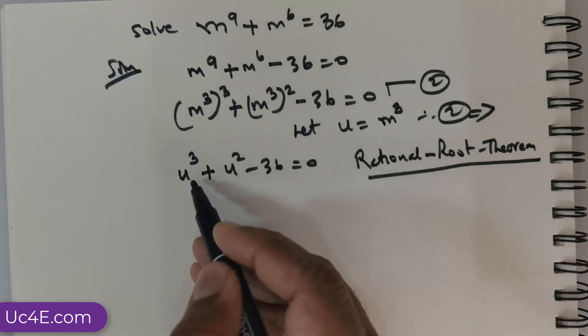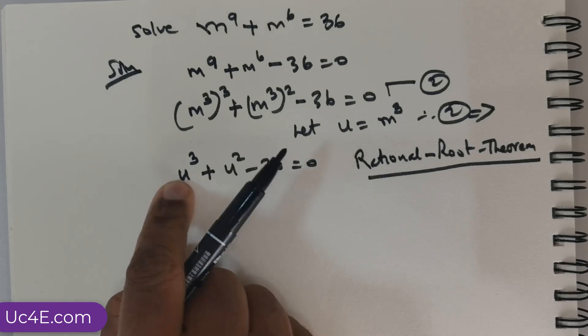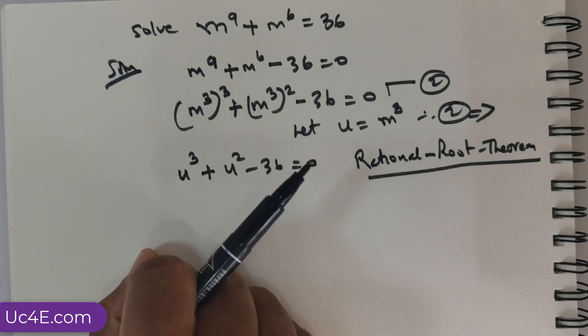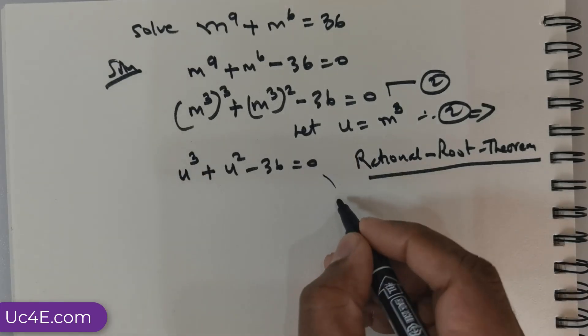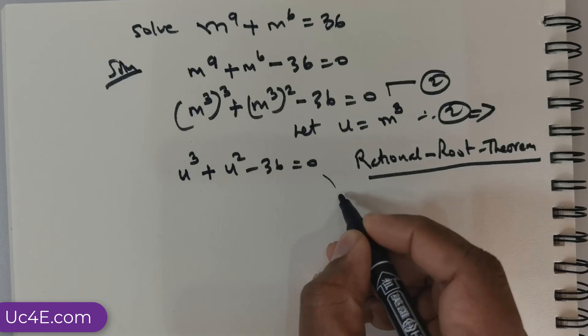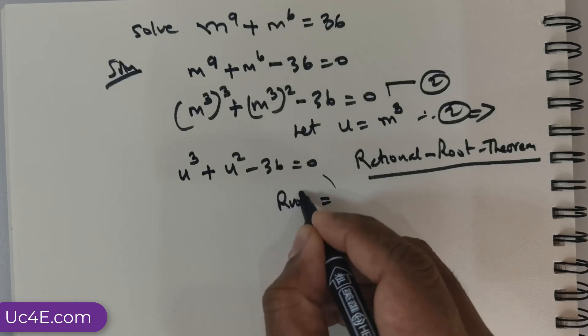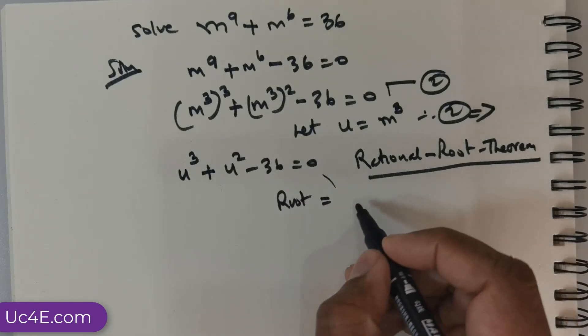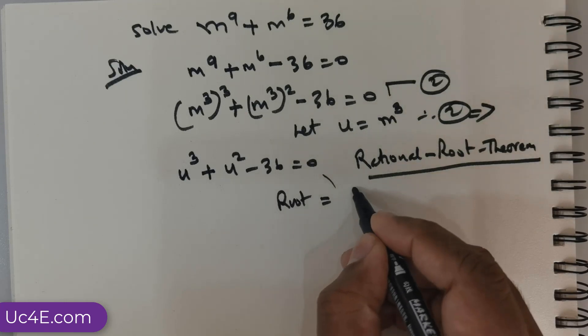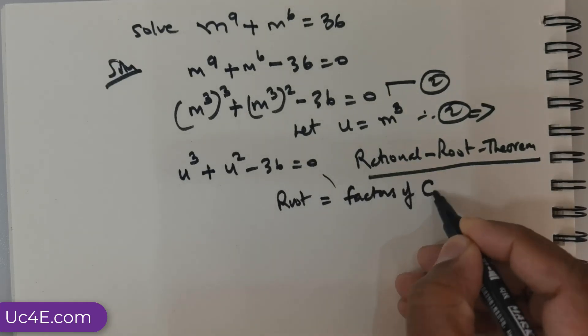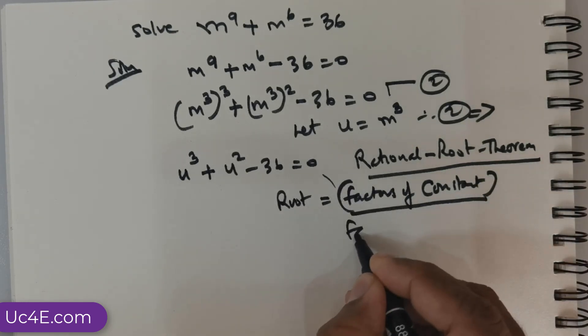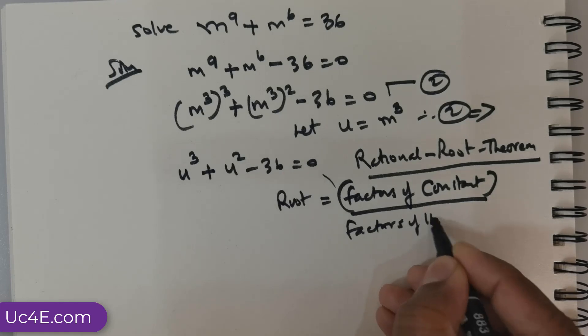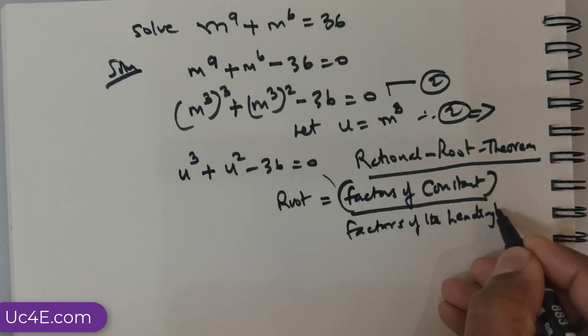Now, what exactly does the Rational Root Theorem state? You have a constant term and you have the term with the power. In other words, the variable with the power. What we actually do is we take the constant term factors. So, if you want to find the root, I am just explaining it in layman terms. The root is going to be, the possibility of the root is the factors of the constant term divided by the factors of the leading term.